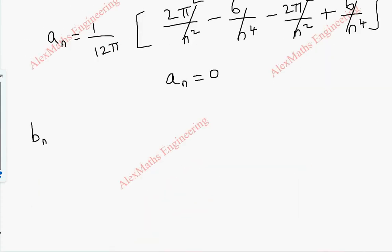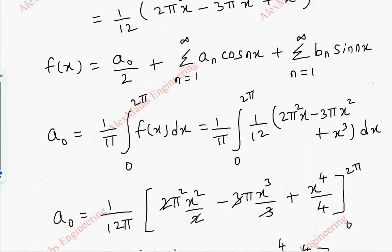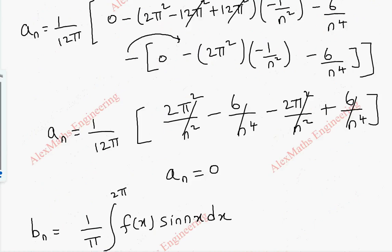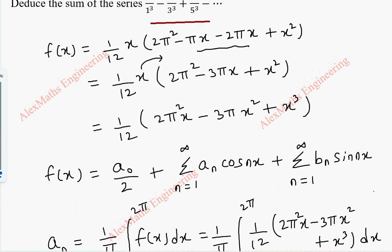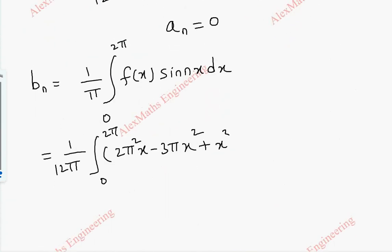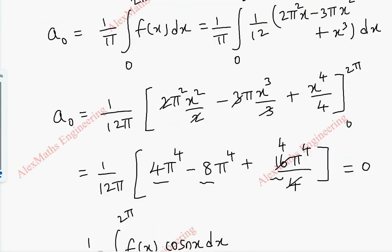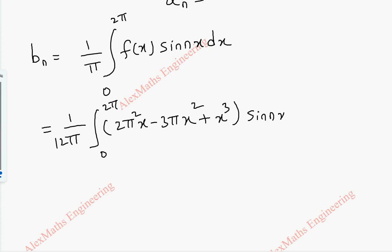Now coming to bₙ. The formula is (1/π) ∫₀²π f(x) sin(nx) dx. So this is (1/π) ∫₀²π (1/12)(2π²x - 3πx² + x³) · sin(nx) dx, with 1/12 taken outside.